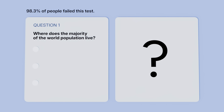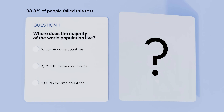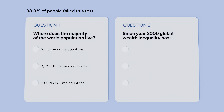Question 1: Where does the majority of the world population live? A. Low income, B. Middle income, or C. High income countries? And question 2: Since year 2000, has the global wealth inequality A. Increased, B. Stayed the same, or C. Decreased? Hold on to your answers — we'll come back to them.